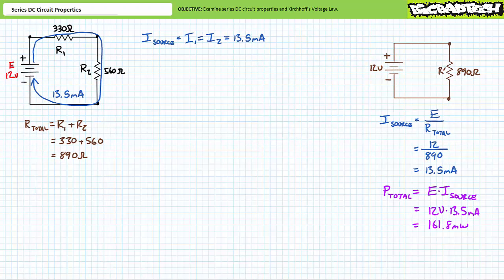Let's now examine the voltage drops across individual elements inside this series circuit. Given we know current through both elements to be roughly 13.5 milliamps, and the fact that we know the resistance of both elements, it's a simple matter of applying Ohm's law to each individual resistor. The voltage drop across R1 will be V1 equals I1 times R1. The voltage drop across R2 will be V2 equals I2 times R2. Given current through each resistor is the same, a smaller resistor will drop a smaller amount of voltage, and a larger resistor will drop a larger amount of voltage.